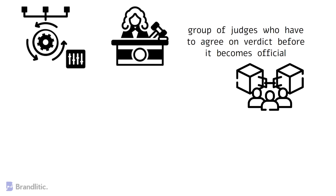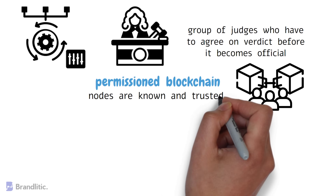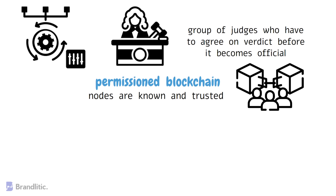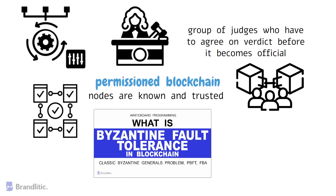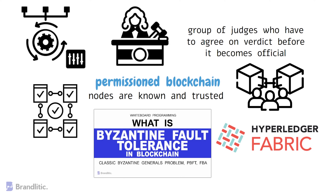BFT is particularly useful in permissioned blockchain networks where nodes are known and trusted. By using BFT, these networks can achieve faster transaction processing times and higher throughput compared to other consensus mechanisms. An example of BFT includes Hyperledger Fabric. Just like Proof of Stake, BFT can also be divided into two derivatives: Practical Byzantine Fault Tolerance and Delegated Byzantine Fault Tolerance.